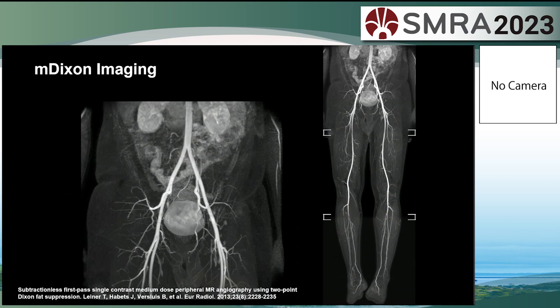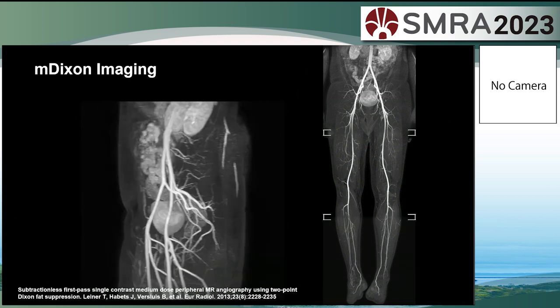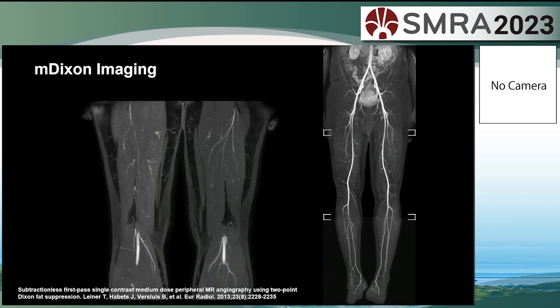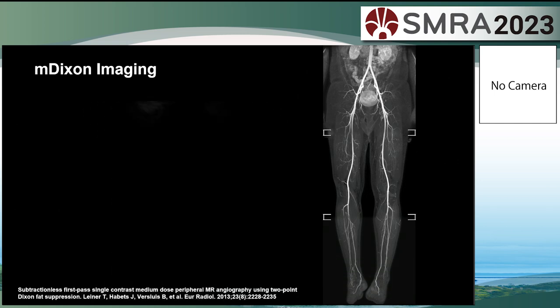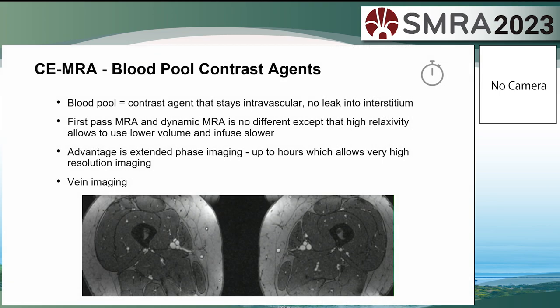Dixon imaging has been introduced for contrast-enhanced MRA — a paper from Tim Leiner with examples from my own practice. It provides intrinsic fat saturation, so we don't need to acquire a non-contrast volume to subtract from our contrast volume. We can go straight to acquiring the contrast-enhanced study.